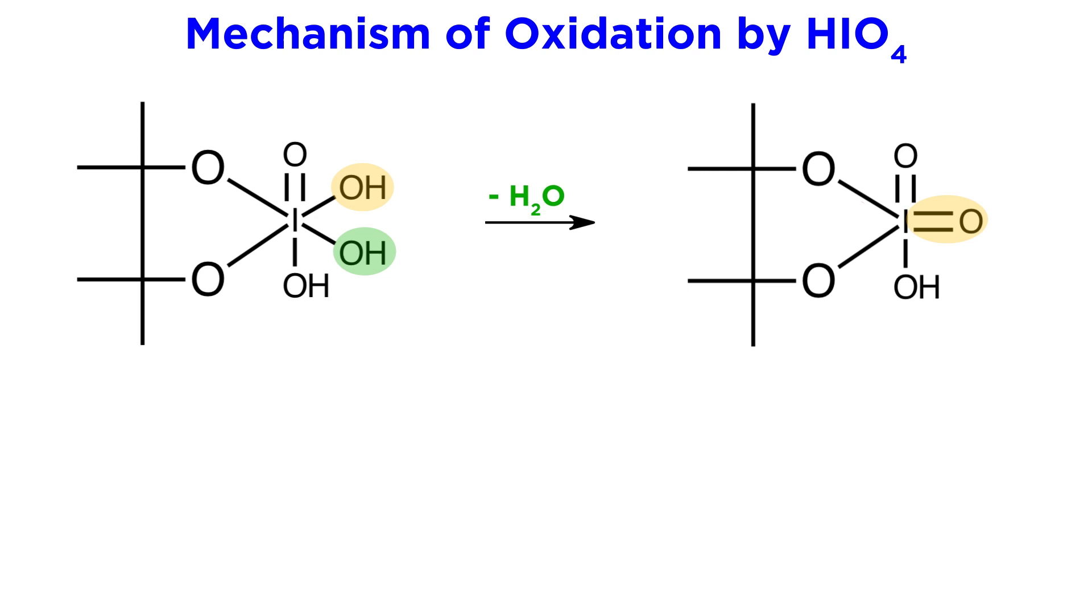This intermediate, which is called a cyclic periodate ester, will undergo cyclization of three sigma bonds as follows. This iodine-oxygen bond will go to form a carbonyl here. This carbon-carbon bond will cleave and form the other carbonyl. And the electrons in this other iodine-oxygen bond will remain with the iodine to form a lone pair.